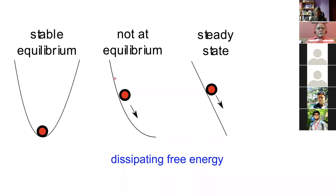The difference between these two cases is that this is a steady state process because we have a constant gradient here. So if I'm an observer located on this ball I actually won't see any change happening even though free energy is being dissipated.